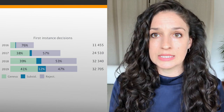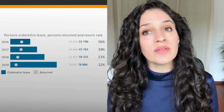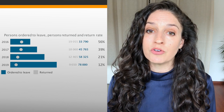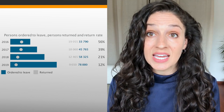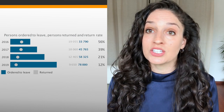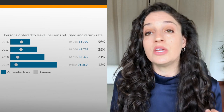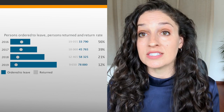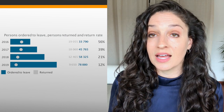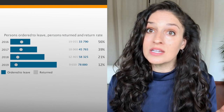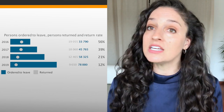We can also look at one indicator of irregular migration: the number of people ordered to leave the country versus those who actually did return. Between 2016 and 2019, anywhere between 12 and 56 percent of people ordered to leave actually left. That difference generally represents people who end up in some kind of irregularity — not having the right to stay in the country.